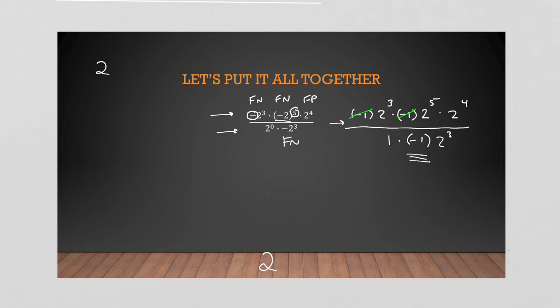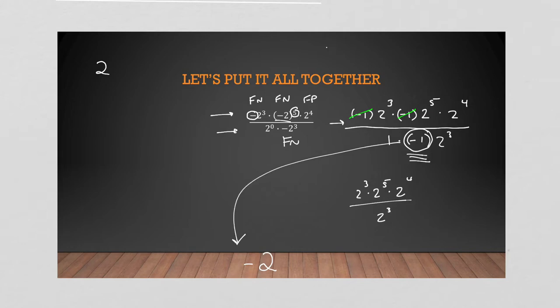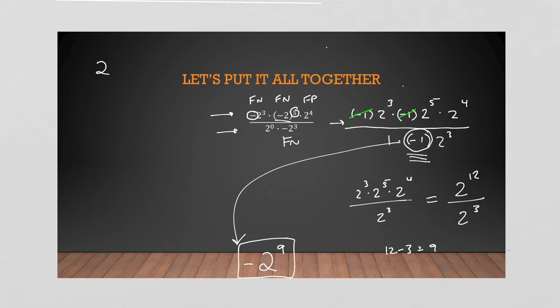We have one negative one left, which we carry straight to the answer — that means our answer is going to be negative. What we have left is two to the three times two to the five times two to the four on top, and two to the three on the bottom. On top, all common base, adding exponents: three plus five is eight, plus four is twelve, so two to the twelve. On the bottom, two to the three. Dividing a common base, we subtract exponents: twelve minus three is nine. So the exponent for our answer is nine.